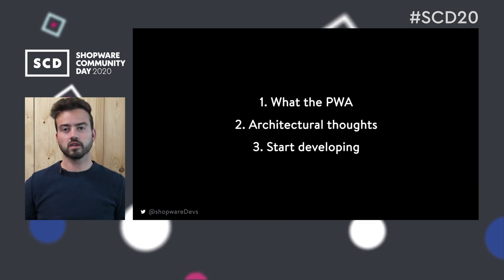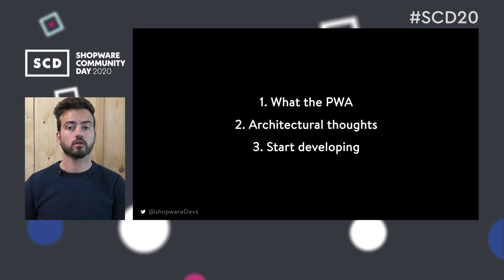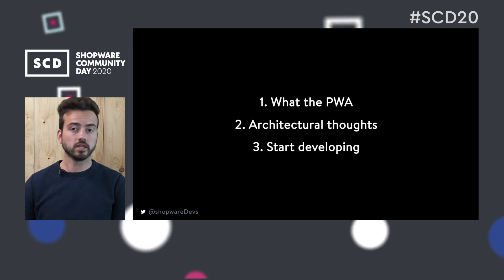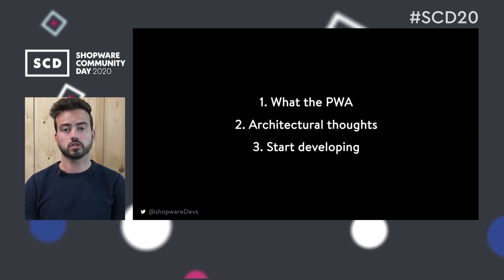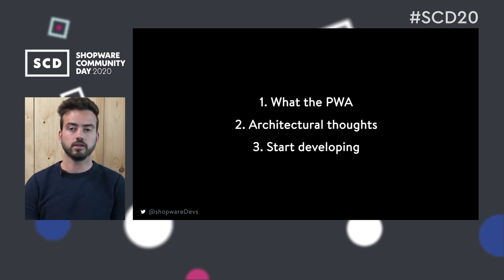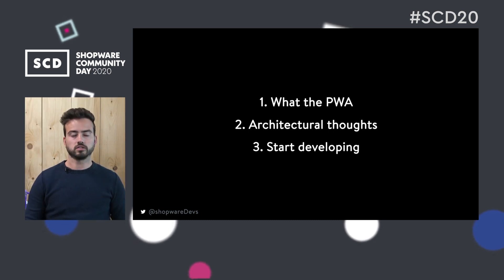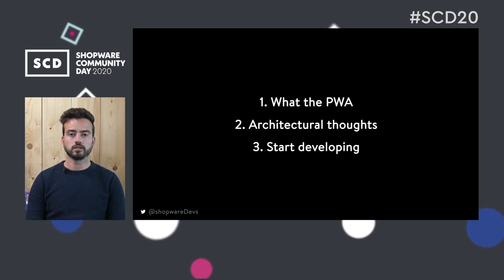We'll start off by giving some general underlying concepts, talking about what PWA is and what other concepts went into the creation of PWA. Then we're going to talk about the architecture and the structure underlying the PWA — how Shopware relates to PWA, how we use the APIs, and what kind of things it enables. In the third part we'll talk about how to customize the PWA, how to set up your own projects, how to contribute, and how to start your own project with PWA.